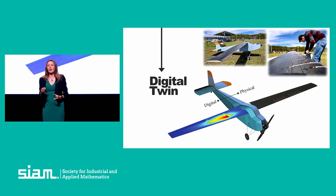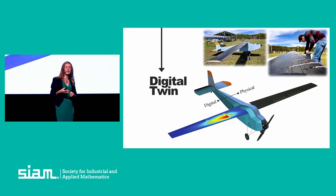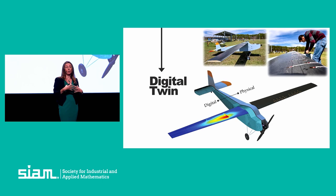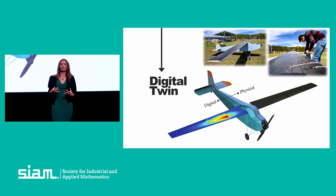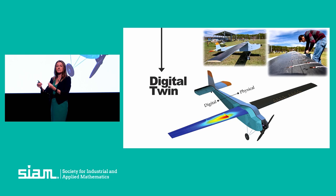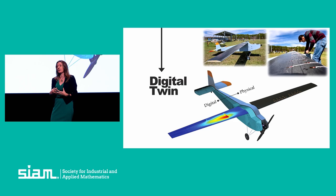Now imagine that you own a fleet of these unmanned aircraft — a fleet of drones — and you had a digital twin for every aircraft in your fleet. Maybe you use this fleet to deliver packages, or to survey farms or low-lying coastal areas. With a digital twin for every aircraft, you could make optimized decisions about which aircraft to send for which mission on any given day, or when to maintain a given aircraft, or when it's time to retire a particular aircraft and buy a new one. This idea of the digital twin is a really powerful decision-making tool.